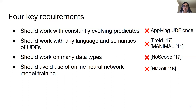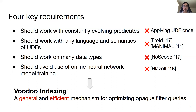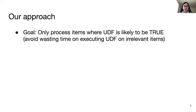Based on these requirements, we propose our method, Voodoo Indexing — a general and efficient mechanism for optimizing opaque filter queries. The specific goal of Voodoo Indexing is to only process items where the UDF is likely to return true, so as to avoid wasting time executing the UDF on irrelevant items.